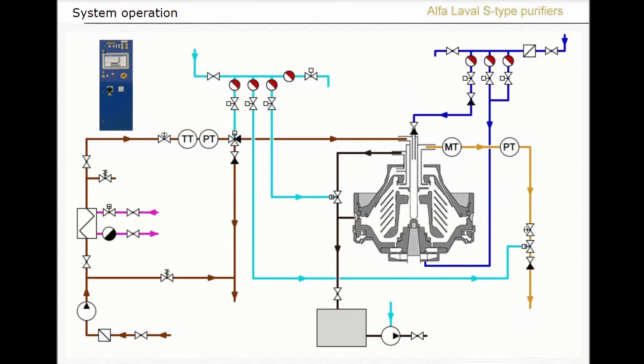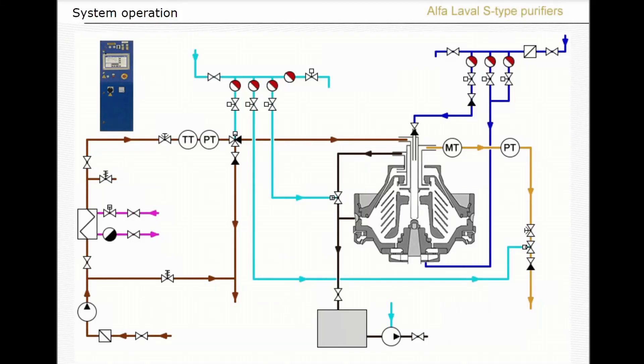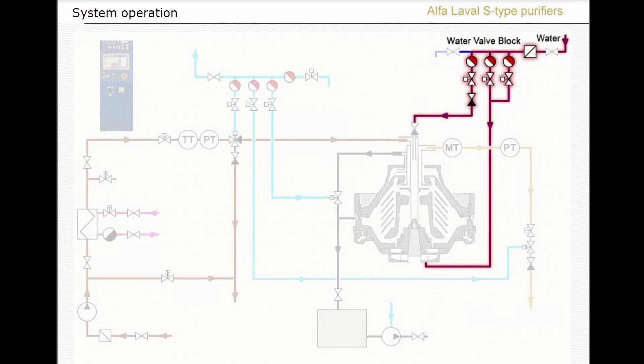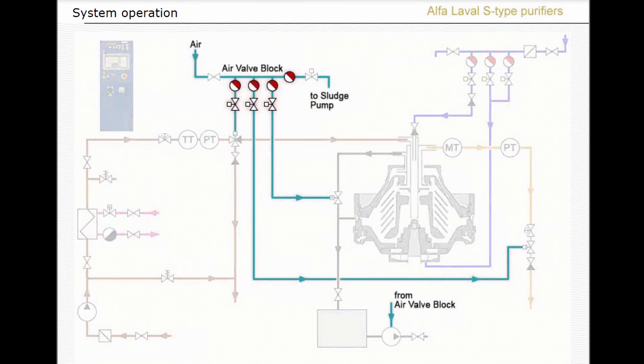In the meantime, the water accumulated in the separator bowl can be removed to the sludge tank by the water drain valve, which, as you have learned, opens according to the signal from the water transducer. The water valve block supplies conditioning water to the bowl interior and operating water to the bowl opening and closing mechanism.